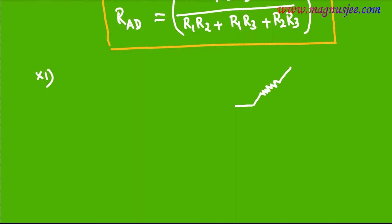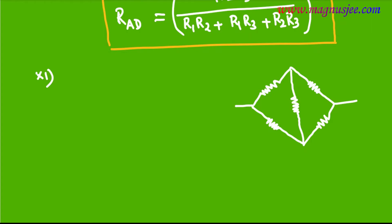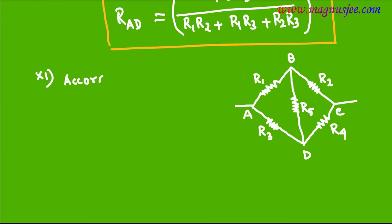Determination of equivalent resistance of five resistances connected in a circuit using Wheatstone Bridge principle. Here we are drawing a circuit containing five resistances. The fifth resistance is connected between points B and D. The resistances are R1, R2, R3, R4, and R5 in the middle. The name of the circuit is ABCD, and between A and C, five resistances are connected as shown in the diagram.